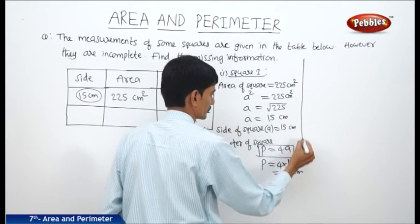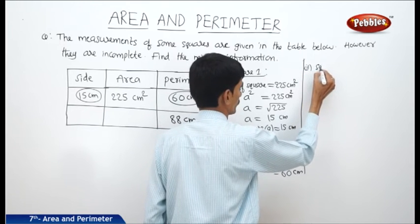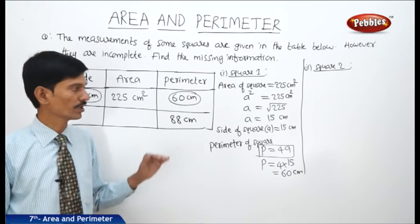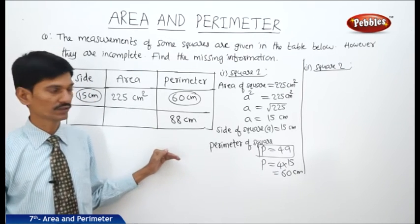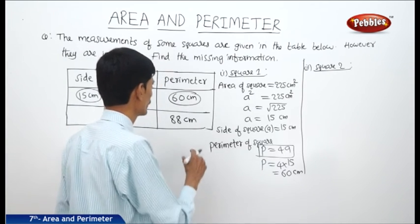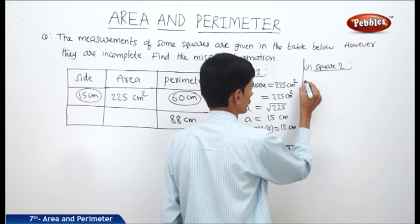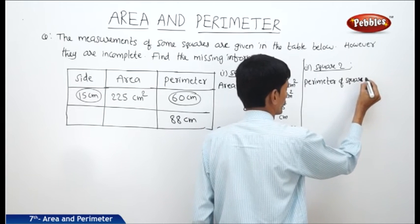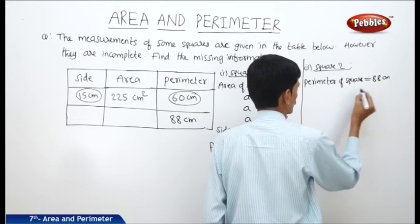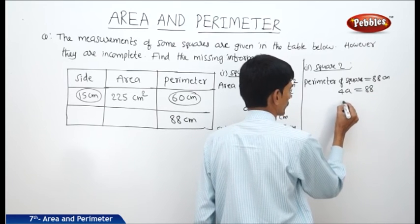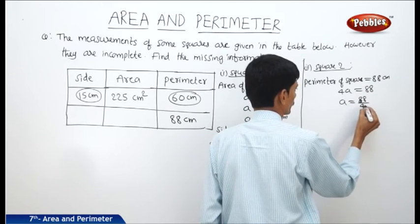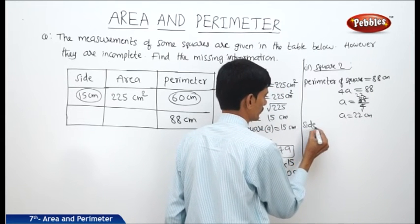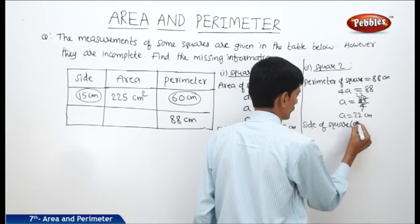For square 2, the perimeter is given as 88 centimeters. Using the formula 4A equals 88, we get A equals 88 divided by 4, which gives A equals 22 centimeters. That means the side of square 2 is 22 centimeters.